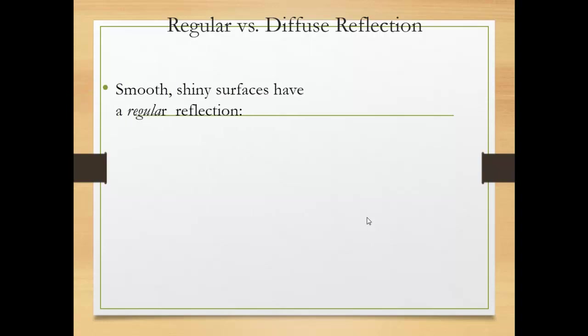Smooth shiny surfaces have a regular reflection. So when the regular reflection happens on a smooth and shiny surface, you see this is a smooth and shiny surface. When the light falls on a smooth and shiny surface, it reflects with the same angle. So we call it regular reflection.